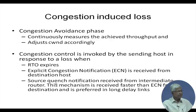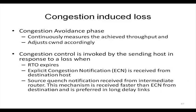There is also source quench notification received from the intermediate router. This mechanism is faster than ECN from the destination. With ECN, the router informs the destination, which then relays it in its ACK — a longer process. Source quench is sent directly back to the sender, making it advantageous in long-delay links like satellite.